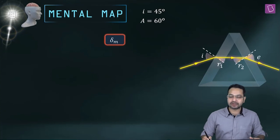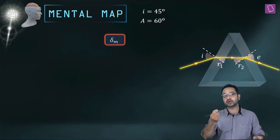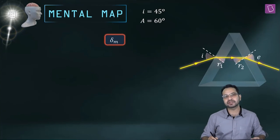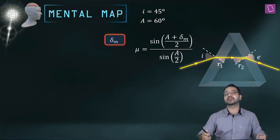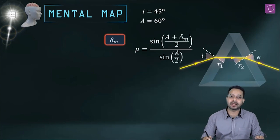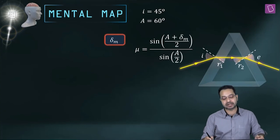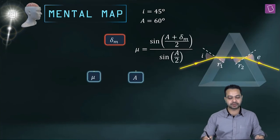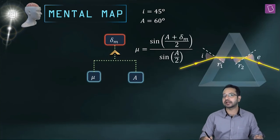What do we know about δ_m? We know only one relationship for δ_m: μ = sin((A + δ_m)/2) / sin(A/2). This tells me two things are missing — μ and A. A is given to us, so we need to find μ.